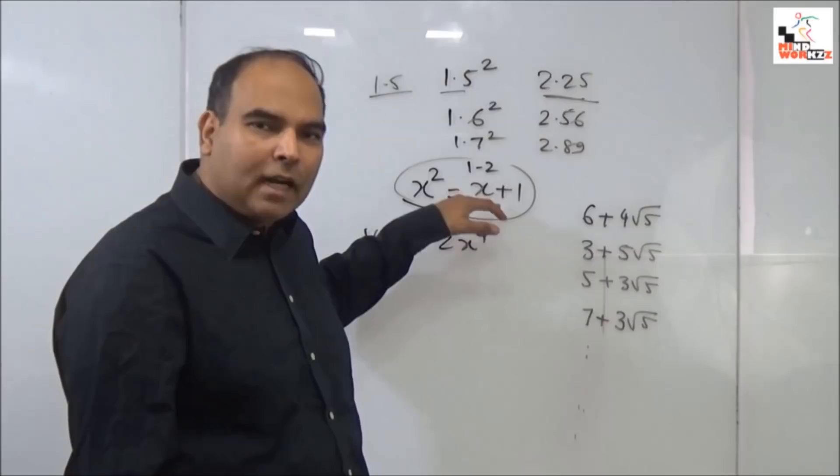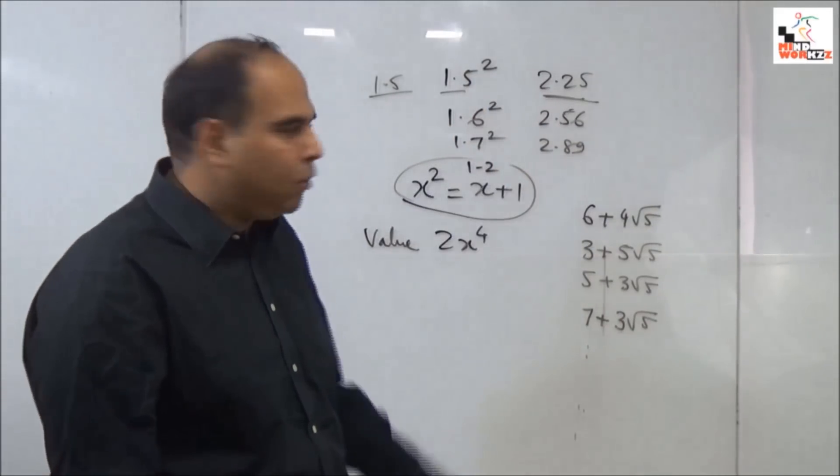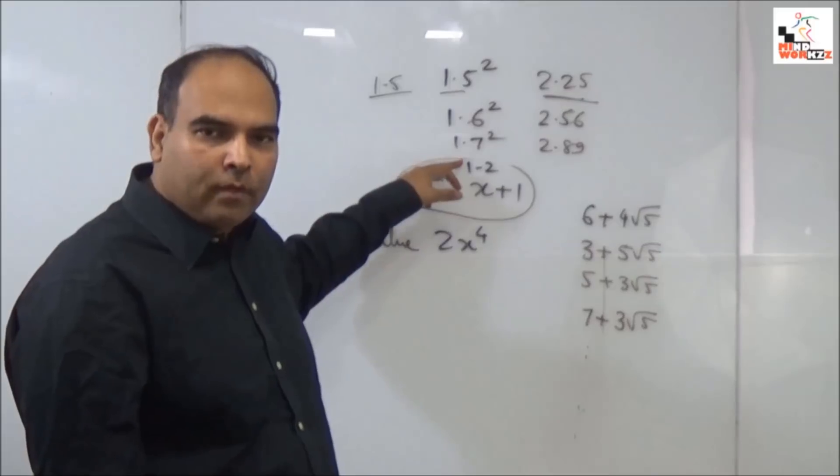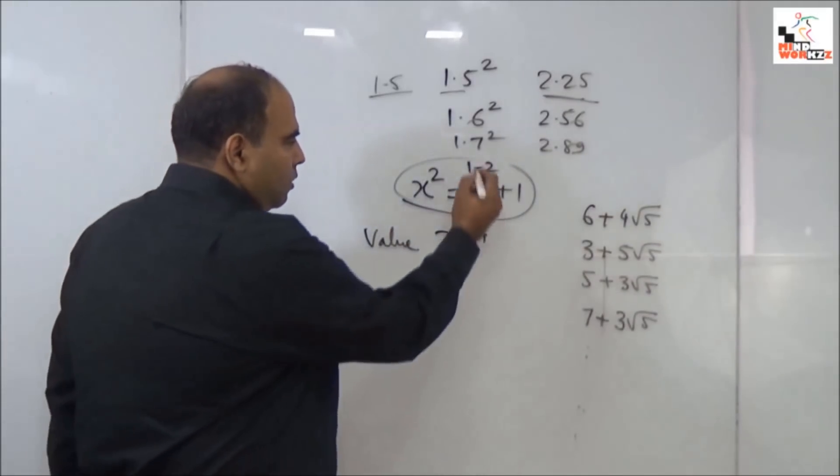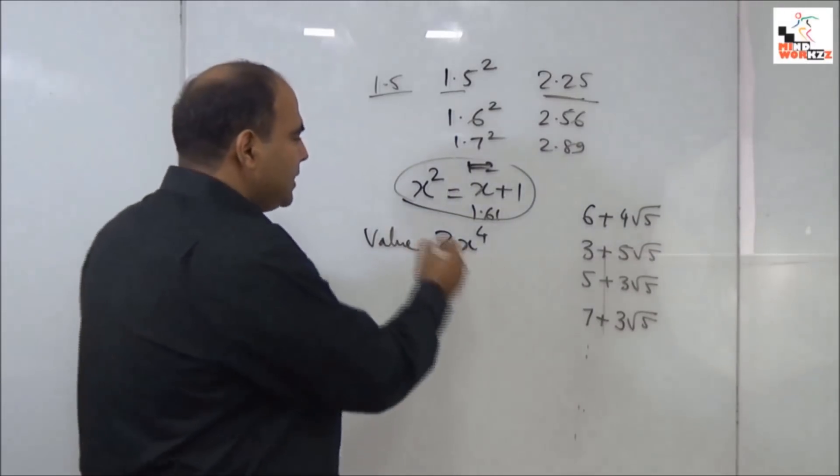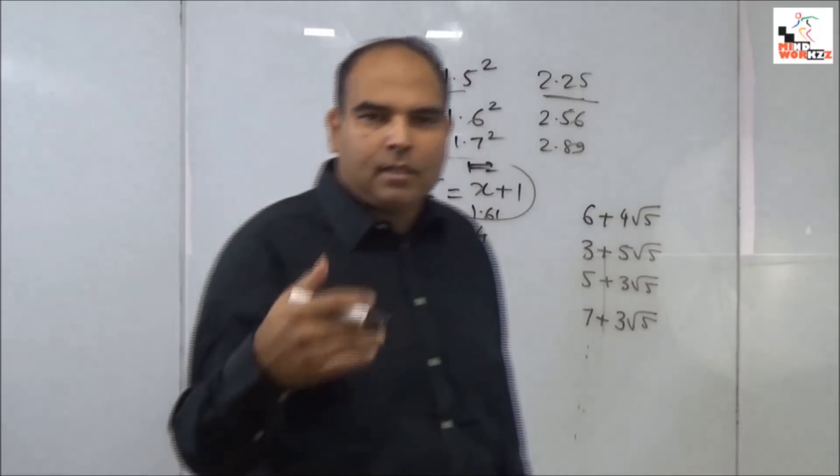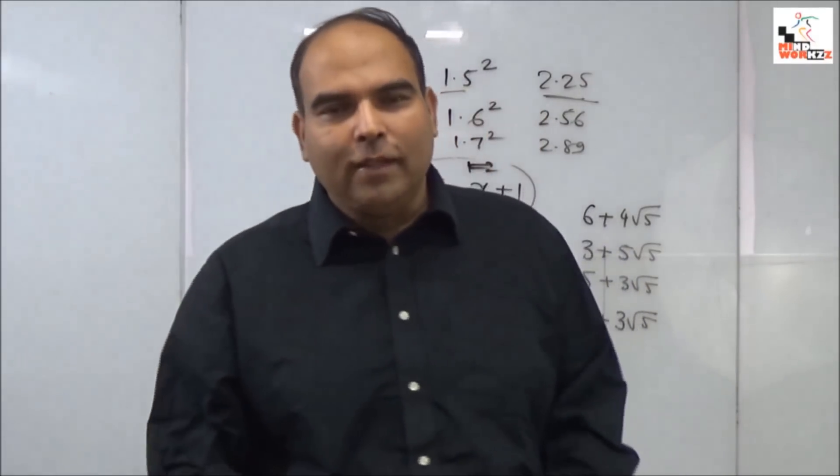It's quite visible, and this can be done in maybe 5 to 10 seconds, that the value of x here which will satisfy this equation will be around 1.6, maybe 1.61, because 1.7 is too far out. So we would go with the value of around 1.61 for x, and in that case x² will be 2.61.